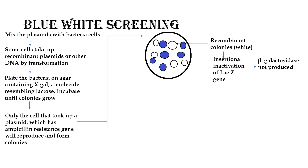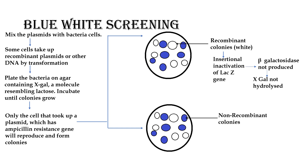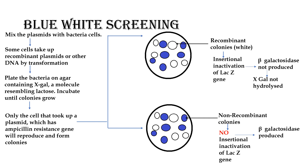Because of insertional inactivation of the lacZ gene in recombinants, beta-galactosidase is not produced and hence X-gal is not hydrolyzed, resulting in white colonies. On the other hand, the non-recombinant colonies are blue in color because there is no insertional inactivation of the lacZ gene. Beta-galactosidase is produced, X-gal is hydrolyzed, and the colonies produce a beautiful blue color.